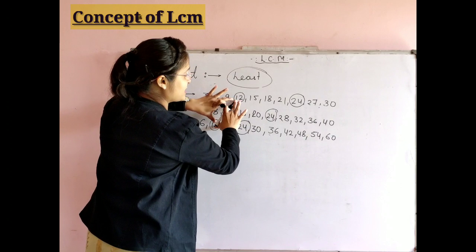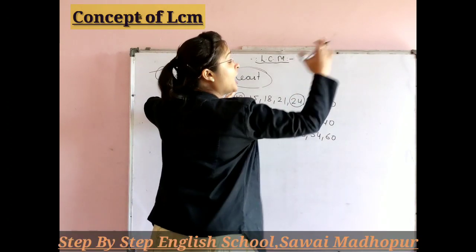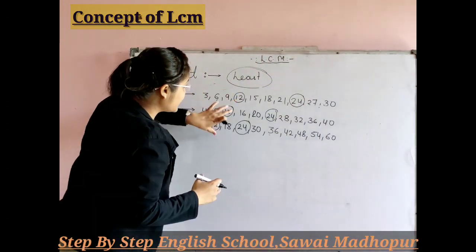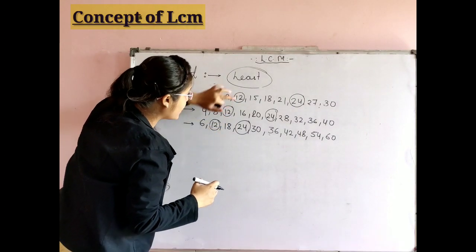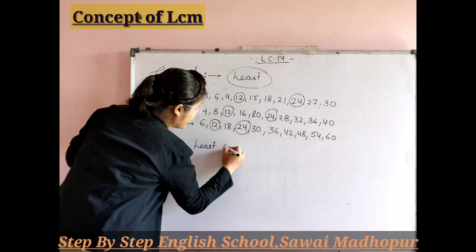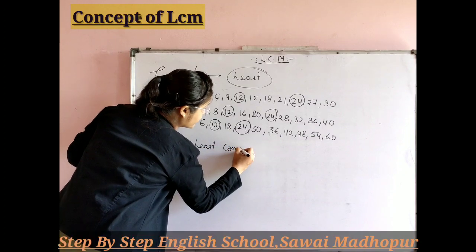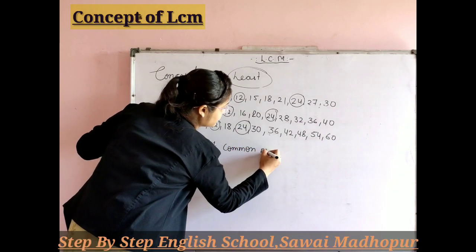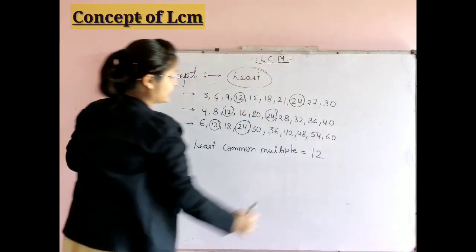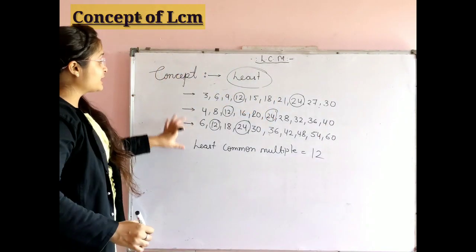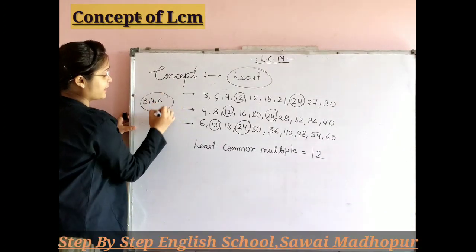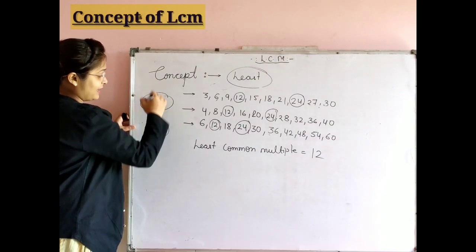So among all the common multiples, the smallest common multiple is what we want. The most small common multiple is 12. So the least common multiple of 3, 4, and 6 is 12.